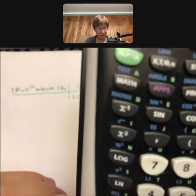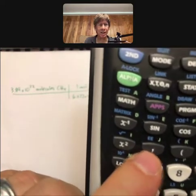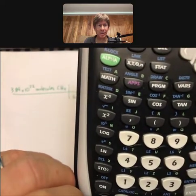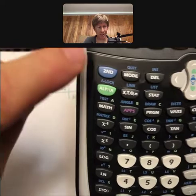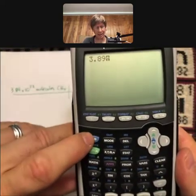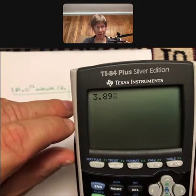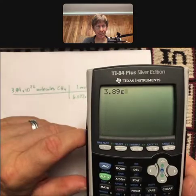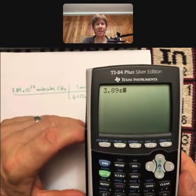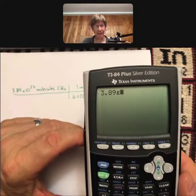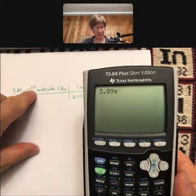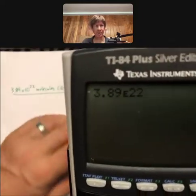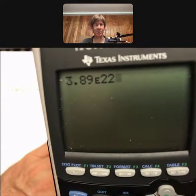And EE is the blue right on top of the comma key. Yeah, there you go. And so in order to get the blues, you have to hit the second function. So I'm going to hit second, and then it does this little up like shift arrow. And then I'm going to hit the EE button and an E appears. That E means times 10 to the, and next I have to put in 22nd. This number is your calculator saying 3.89 times 10 to the 22nd.